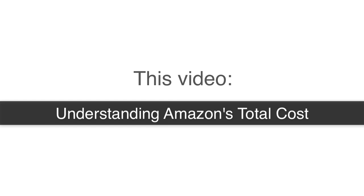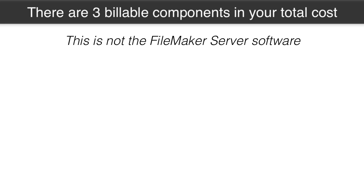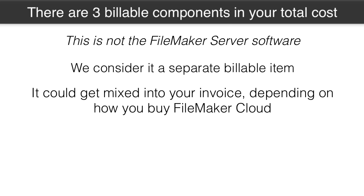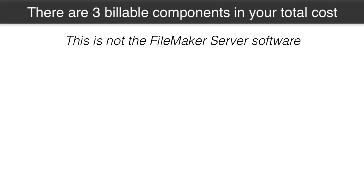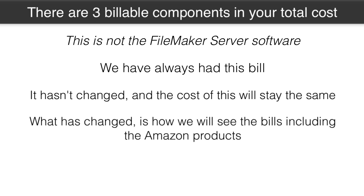There are three billable components that you will see in your monthly or annual Amazon bill. I'm not talking about the FileMaker Server software — I consider that a separate billable item. It might get mixed into your Amazon bill depending on how you purchase FileMaker Cloud, but FileMaker Server software is a bill we have always had and its cost has not changed. What's new with FileMaker Cloud is how we're going to see Amazon's infrastructure — the virtual servers that we're going to rent.